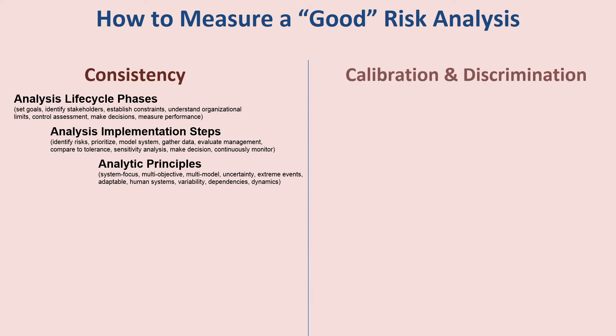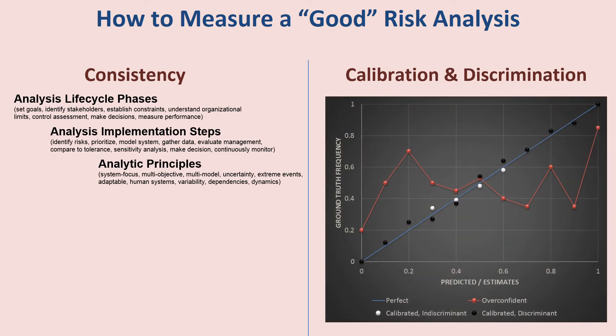Next is the calibration and discrimination process of the risk assessment. On the x-axis are the predicted estimates — when we ask someone to estimate the probability that something bad is going to happen — and on the y-axis are the actual ground truths. The blue line describes a perfectly calibrated individual: every time they say something is 0.2 probability, it happens 20% of the time and doesn't happen 80% of the time. Every time they estimate 80% probability, it happens 80% of the time.